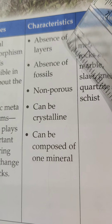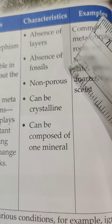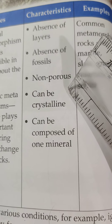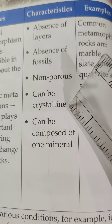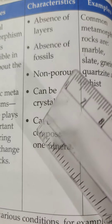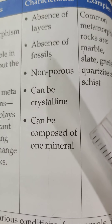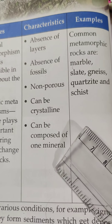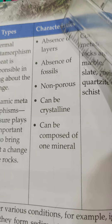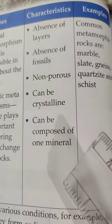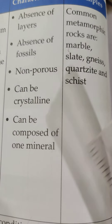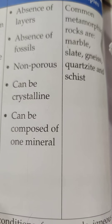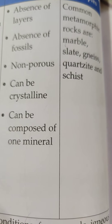Metamorphic rocks have an absence of layers and absence of fossils. They are non-porous, sometimes crystalline, and composed of only one type of mineral. Common examples are marble and slate.